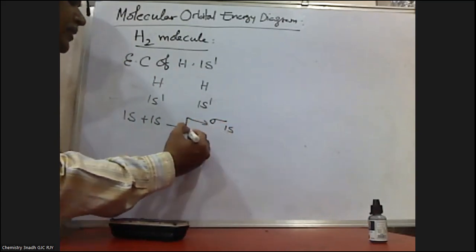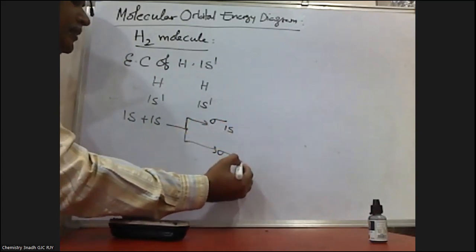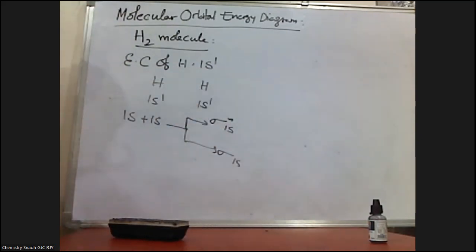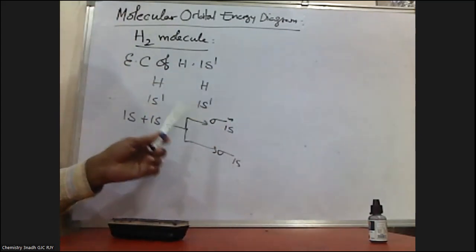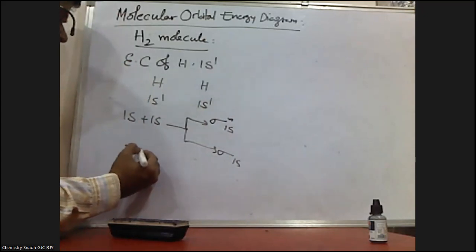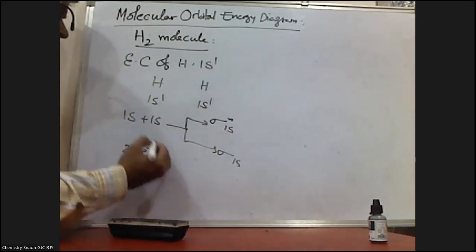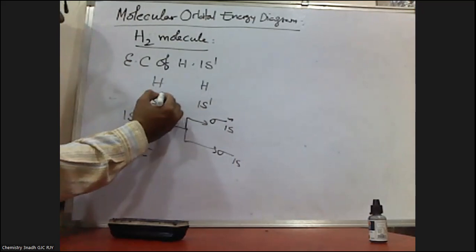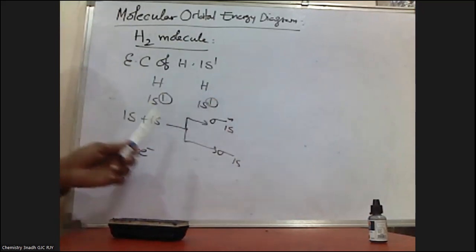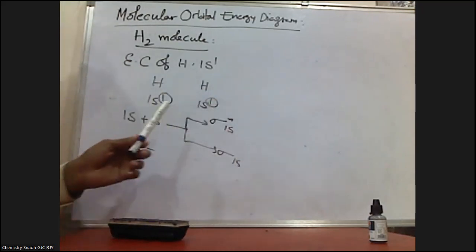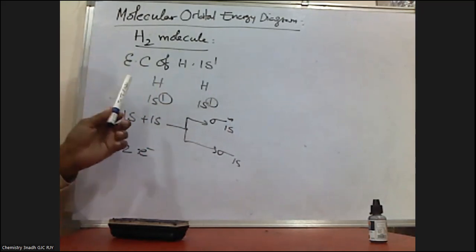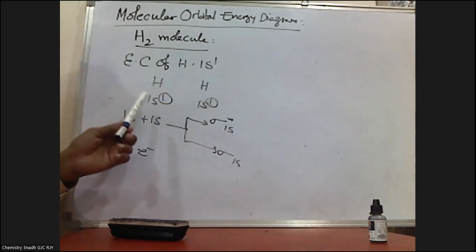These 1s atomic orbitals of the two hydrogen atoms will linearly combine and form two molecular orbitals — one is sigma 1s and the other is sigma* 1s. So in total, we need to fill two electrons into the molecular orbitals of the H₂ molecule, because 1 plus 1 gives two electrons.